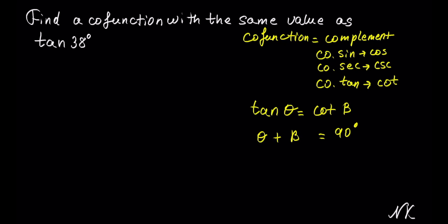And since we are only given angle theta, let's solve for angle beta in terms of theta. So, minus theta minus theta. The second angle has to be equal to 90 degrees minus theta.